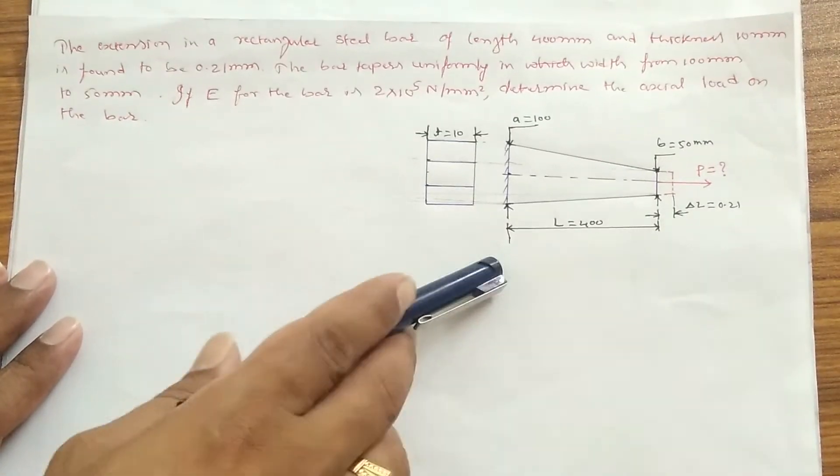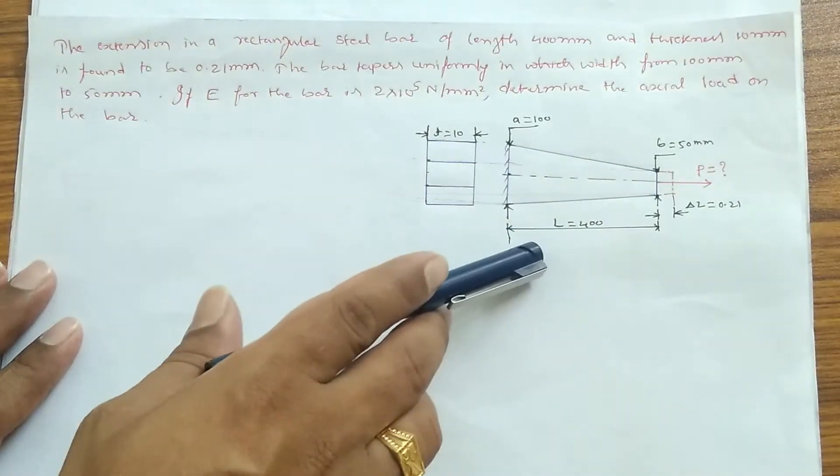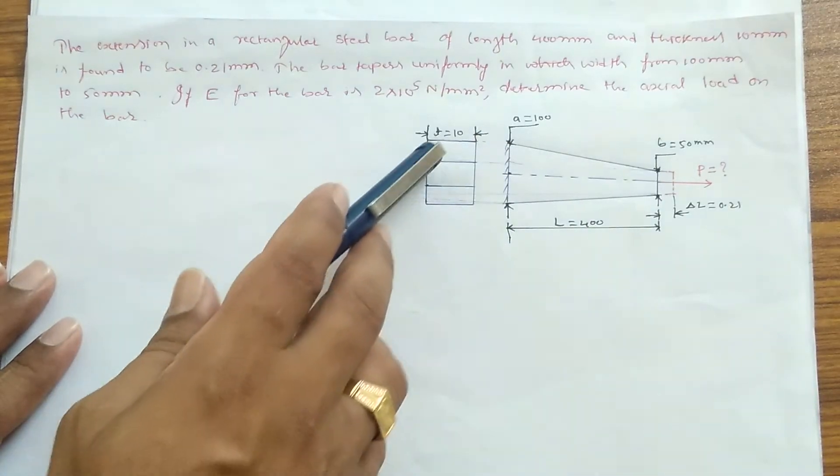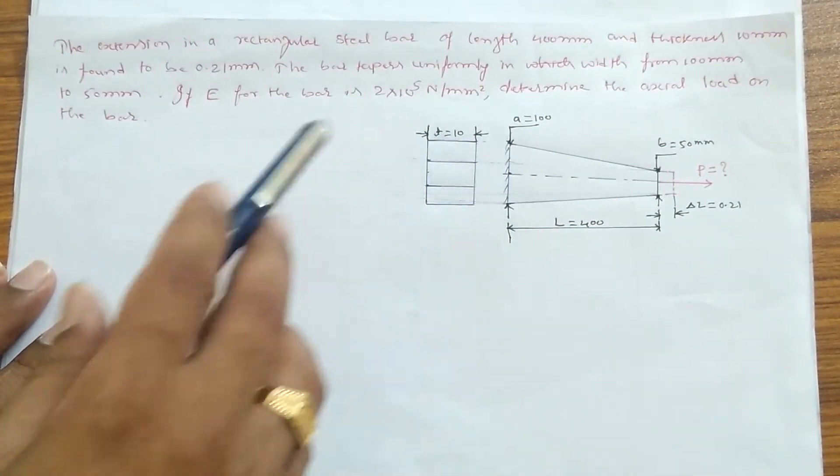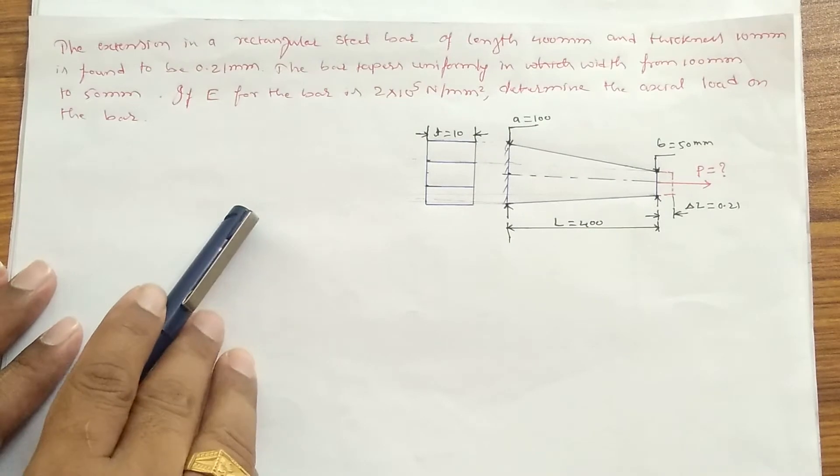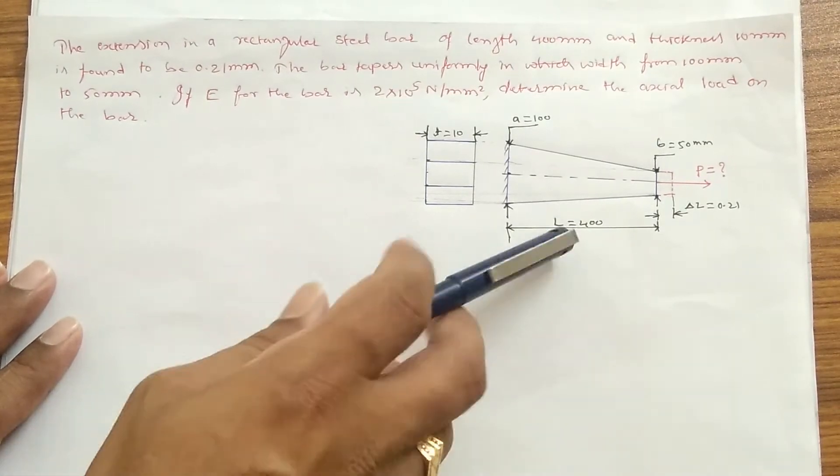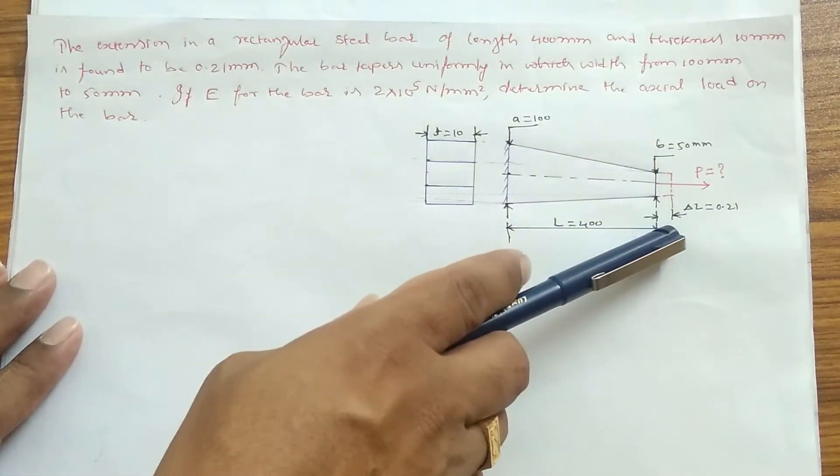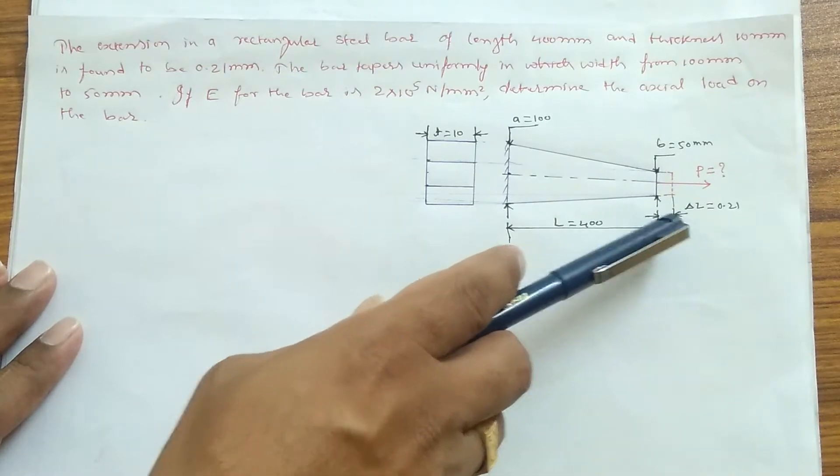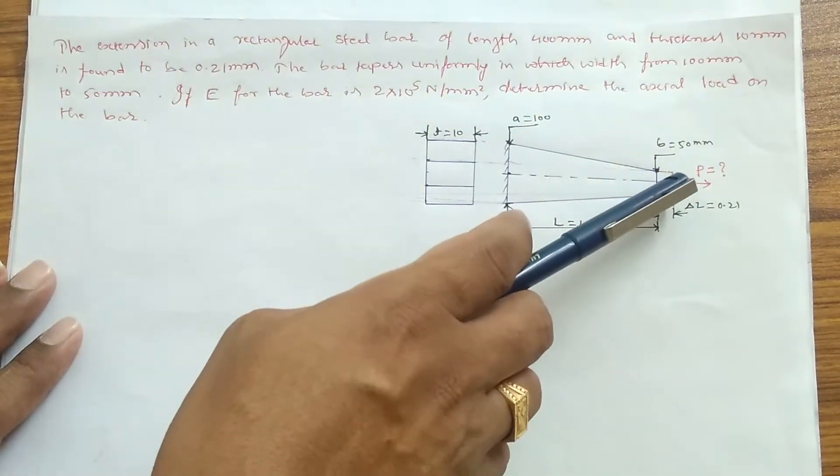So it's a 400 mm length and 10 mm thickness. This thickness is found to be 0.21 mm. You can see here, delta L means after you apply the force P, it gets extended by 0.21 mm. That is what we call delta L, the change in length.